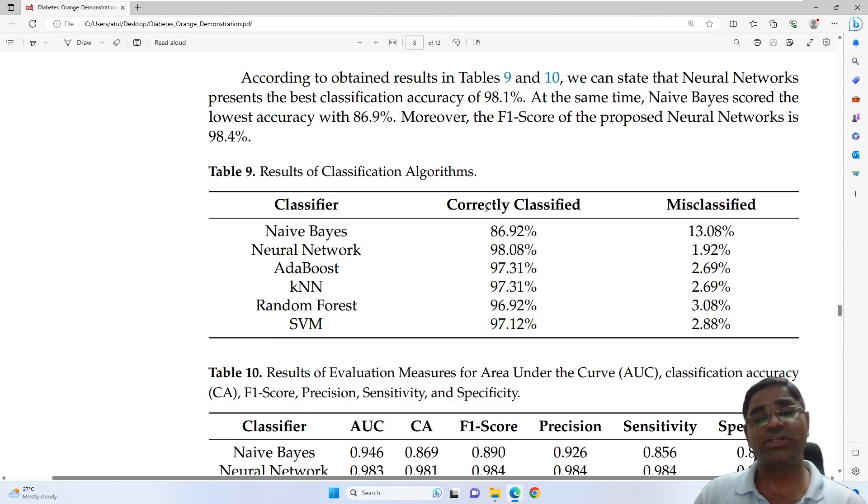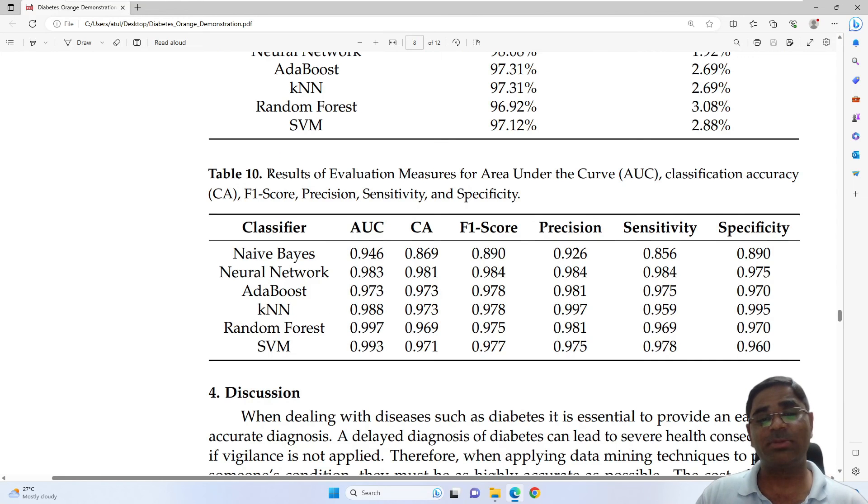The next table shows the results of classification algorithms. Here all the different types of models created by machine learning algorithms show how many correctly classified and what percentage of misclassified dataset was present. The next table describes the performance matrices of different types of models created using machine learning algorithms. This summarizes our article.